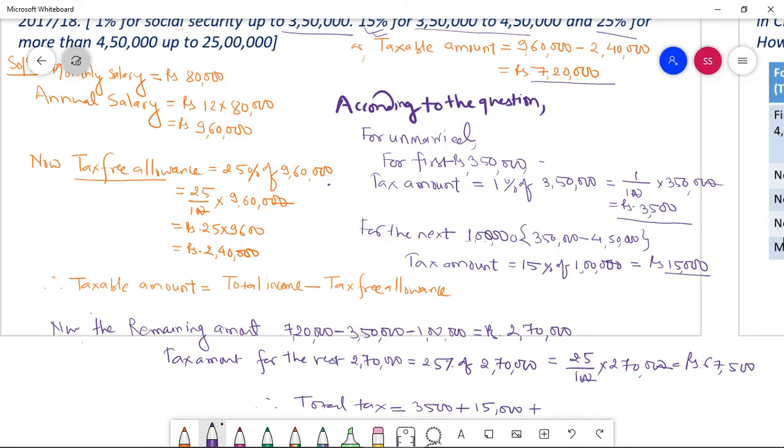Can you tell me the total? Fifteen thousand plus three thousand five hundred. Eighty six thousand, is it eighty six thousand? The total is eighty six thousand. This is the total tax.